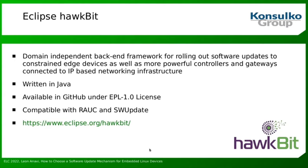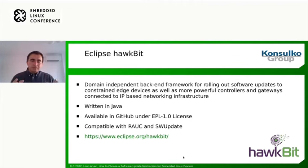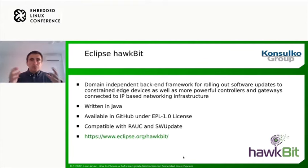Eclipse Hawkbit is a domain-independent backend framework for rolling out software updates to constrained edge devices, as well as more powerful controllers and gateways connected to IP-based network infrastructure. It's written in Java, available on GitHub under EPL 1.0 license, and compatible with RAUC and SWUpdate. So unlike Mender, which has an end-to-end solution including a web interface for managing updates, RAUC and SWUpdate don't have this built-in — but with a third-party tool like Eclipse Hawkbit, we can achieve the same result.